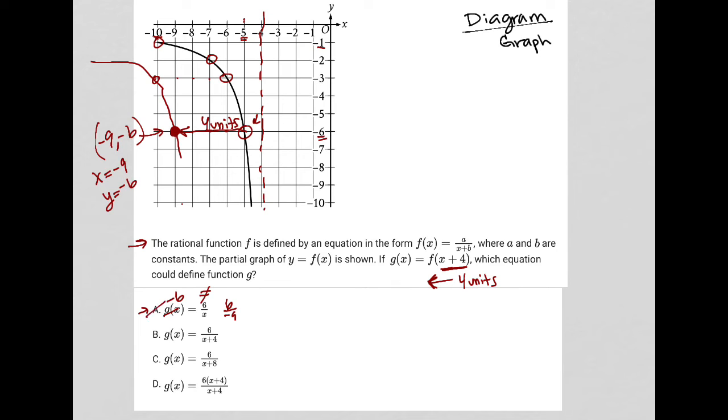How about for choice B? Does negative six equal six over negative nine plus four? No, it does not. So that's gone.